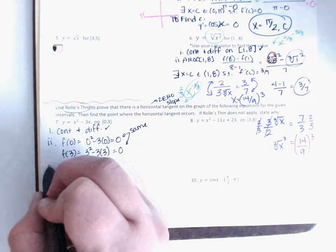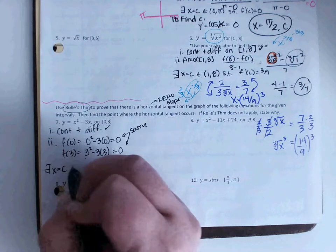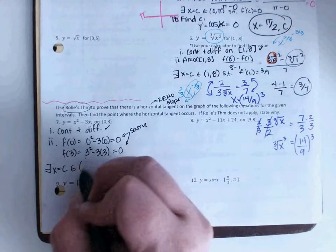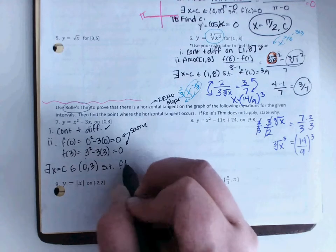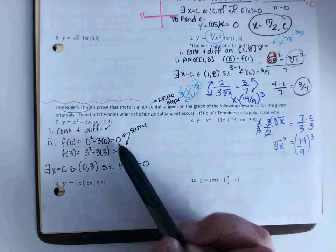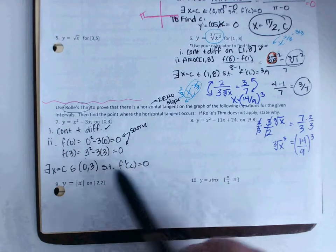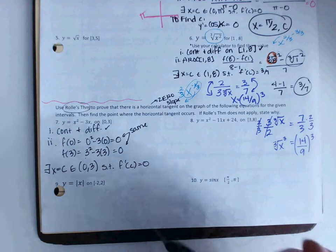That means that Rolle's theorem guarantees there must exist an x equals c within the interval from 0 to 3 such that f prime of c is 0. Remember that if these match, my graph had to turn around. That means it has to have a 0 for my f prime, which is my slope.